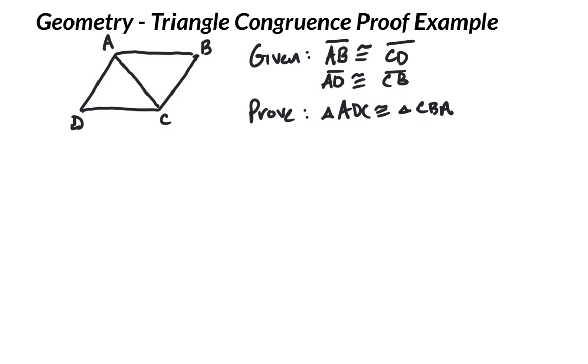So now I'm going to do this with a flowchart for those that are taking a course that does those. AB is congruent to CD, so this was given to us. AD is congruent to CB.